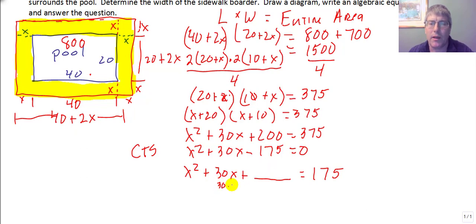And this becomes 1 half of 30. So 30 times 1 half, that goes up here. That's 15 squared. So I am adding 225 to the other side as well. So my perfect square trinomial becomes x plus 15.